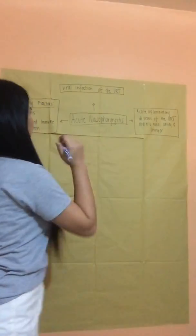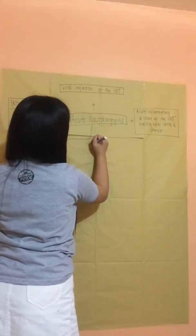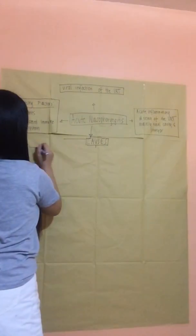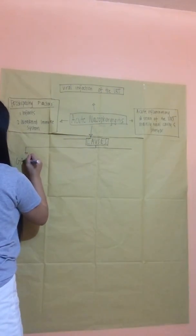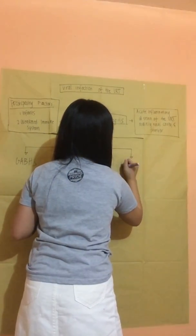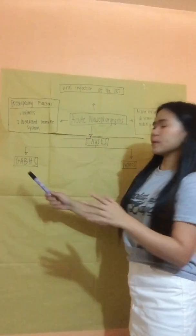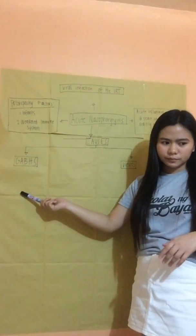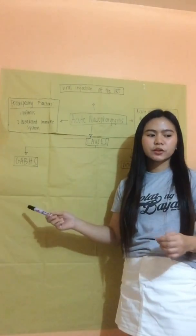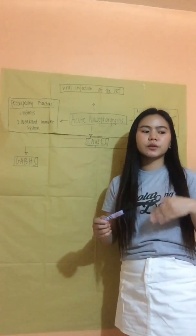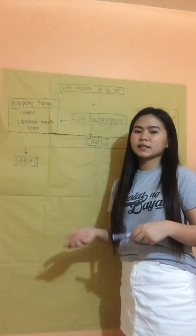There are two factors that can cause acute nasopharyngitis. First is GABHS, or Group A beta-hemolytic streptococcal infections, and then viruses. The GABHS can spread via respiratory droplets through close contact, like when someone sneezes or breathes on you, and the incubation period can last for 2 to 5 days.